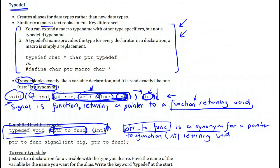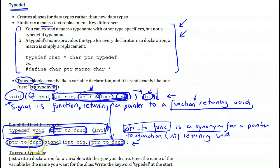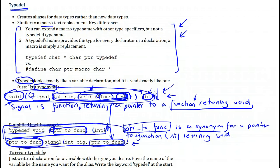Going back to our original declaration, we'll rewrite it using our new 'pointer_to_func' typedef. Signal is a function taking two arguments — notice how 'pointer_to_func' is used here because it's exactly the same as what we defined. It takes these two arguments and returns a pointer to a function returning void. We've used 'pointer_to_func' in two places, simplifying the original declaration into something much clearer and simpler to read.